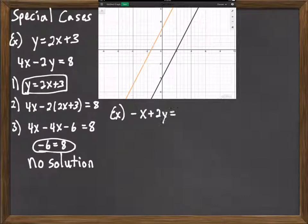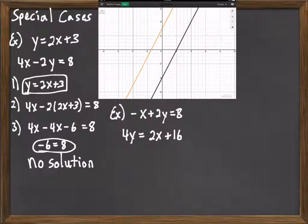And let's consider a second example. Consider the system negative x plus 2y equals 8 and 4y equals 2x plus 16. So we want to solve this system. So again we begin by solving for one of our variables.